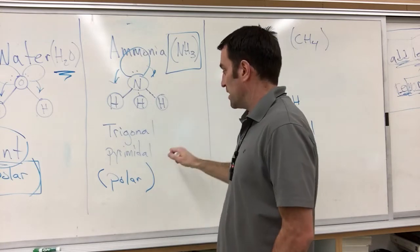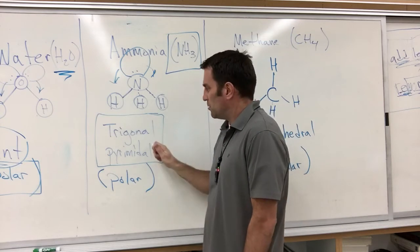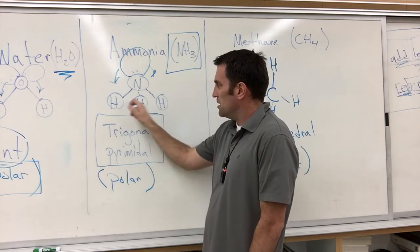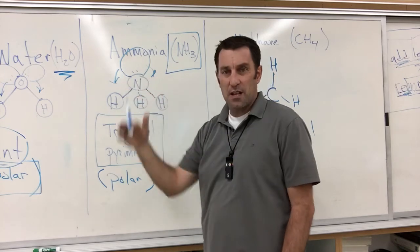Now this has a name, it's called trigonal pyramidal. Trigonal pyramidal means it has three things attached to the central atom, but they're forced down into the shape of a pyramid because of this electron pair up here.